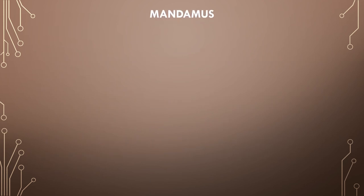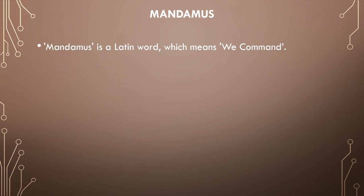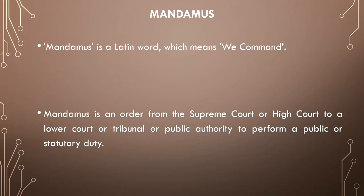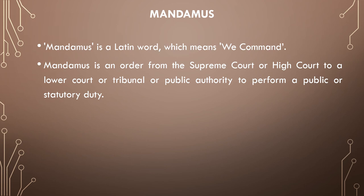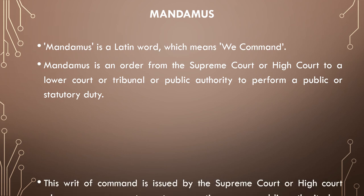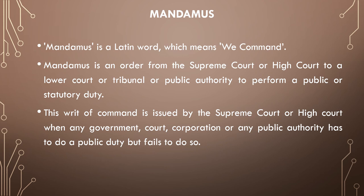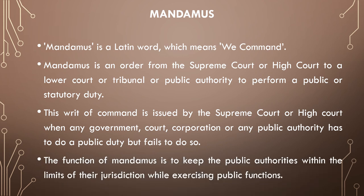The next is the writ of mandamus, a Latin word which means 'we command.' Mandamus is an order from the Supreme Court or High Court to a lower court, tribunal, or public authority to perform a public or statutory duty. This writ is issued when any government, court, corporation, or public authority has to do a public duty but fails to do so. The function of mandamus is to keep the public authority within the limits of their jurisdiction while exercising public functions.